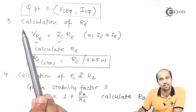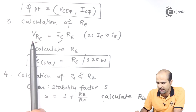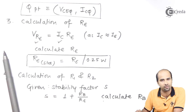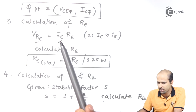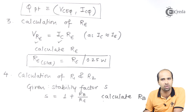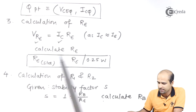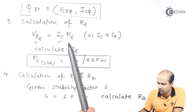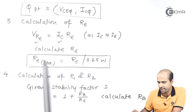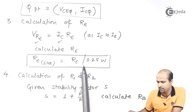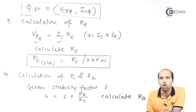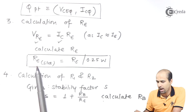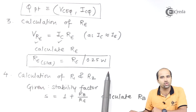Third step is calculation of RE. Since VRE is 10 percent of VCC — suppose VCC is 20 volts, then VRE is 2 volts. With this VRE and the value of IC calculated in the Q point step, we can easily calculate the value of RE. Once we get the value of RE, we will standardize it as RE slash 0.25 Watt, since this is small signal analysis and we use low power rating resistances.